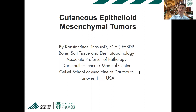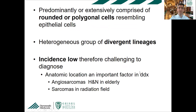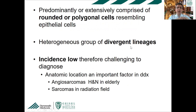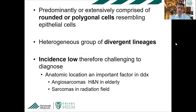There are no conflicts of interest. What do you mean by the term 'epithelioid'? These tumors are predominantly or extensively comprised of rounded or polygonal cells resembling epithelial cells. That is the differential, but they're not really of epithelial lineage.